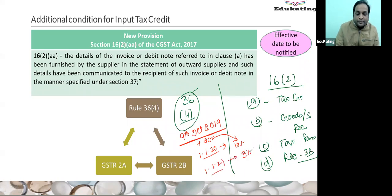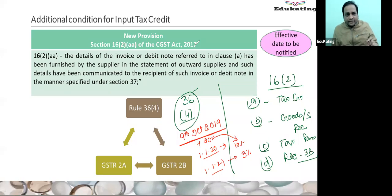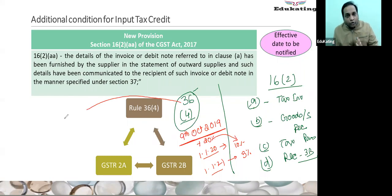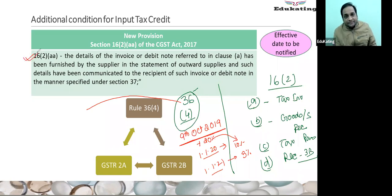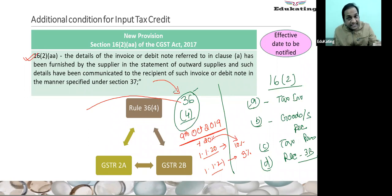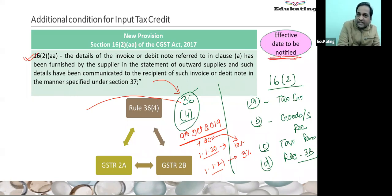Now the important question: we also know that Rule 36(4) has been challenged in multiple courts. Writ petitions have been accepted and challenged in multiple courts, like Rajasthan court, and notice has been issued. Now this amendment has been inserted — can we say it gives legal backing to Rule 36(4)? Prima facie you can say so, but I should say even beyond that. The date when it is notified, Rule 36(4) has no further relevance.